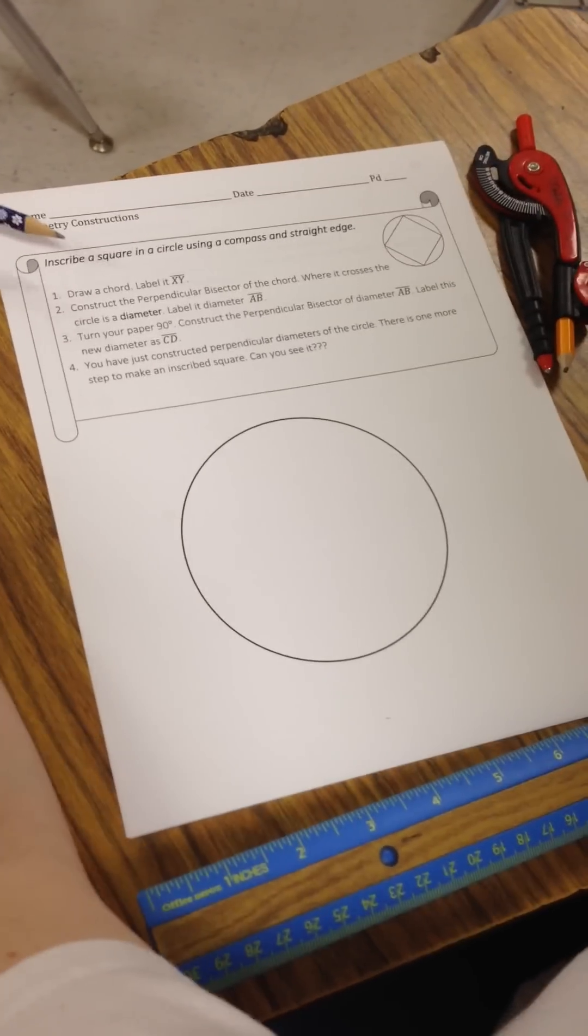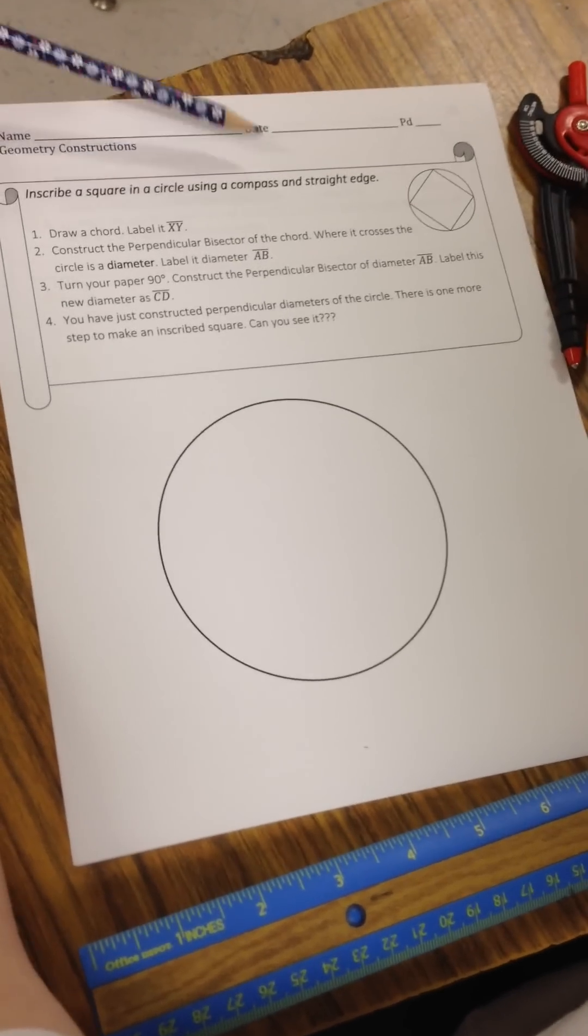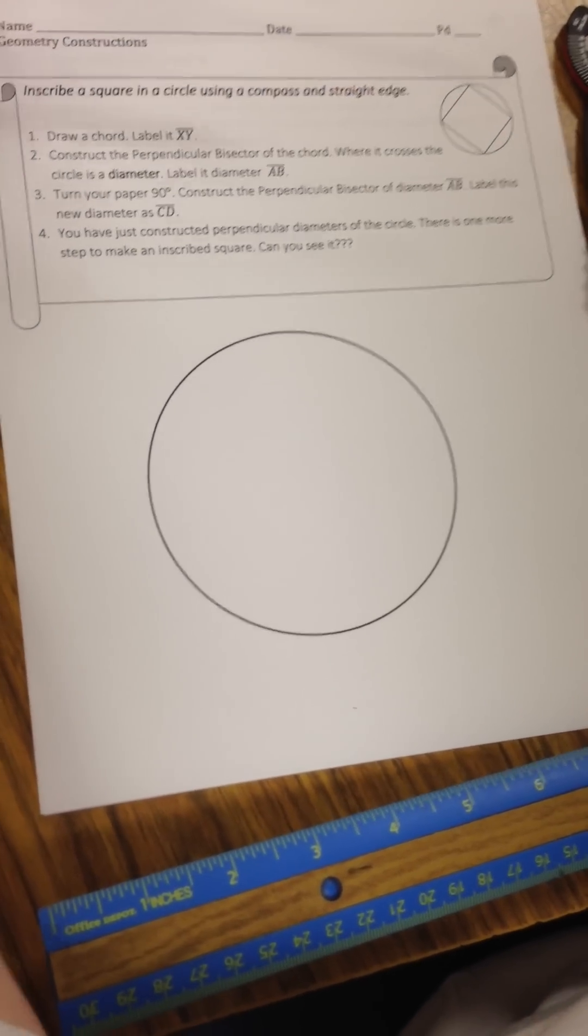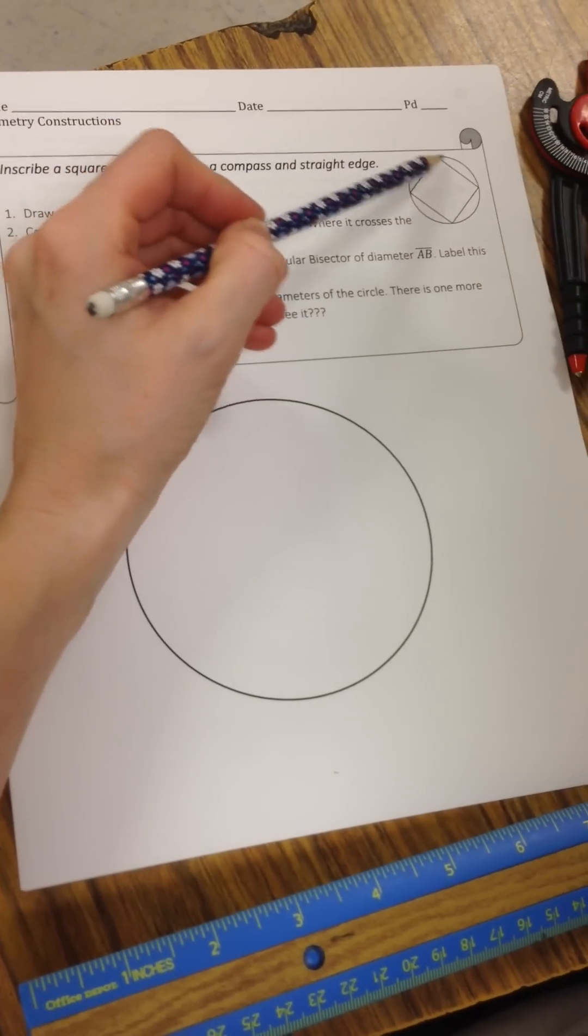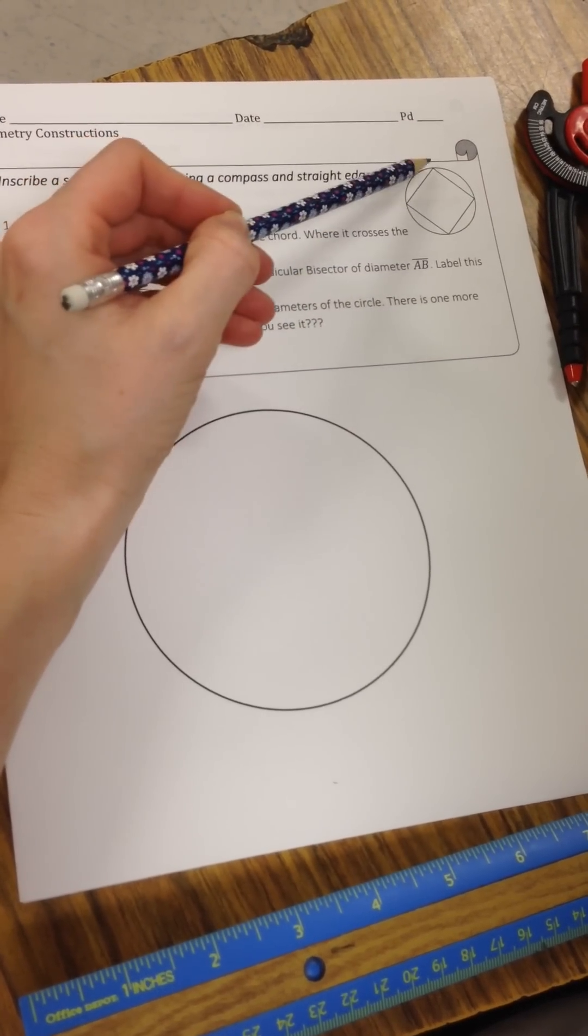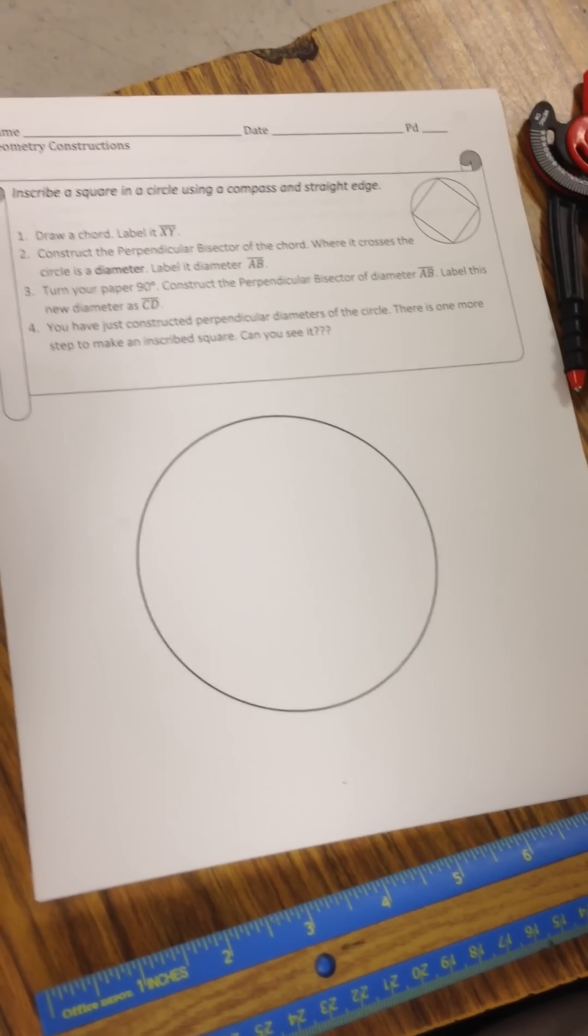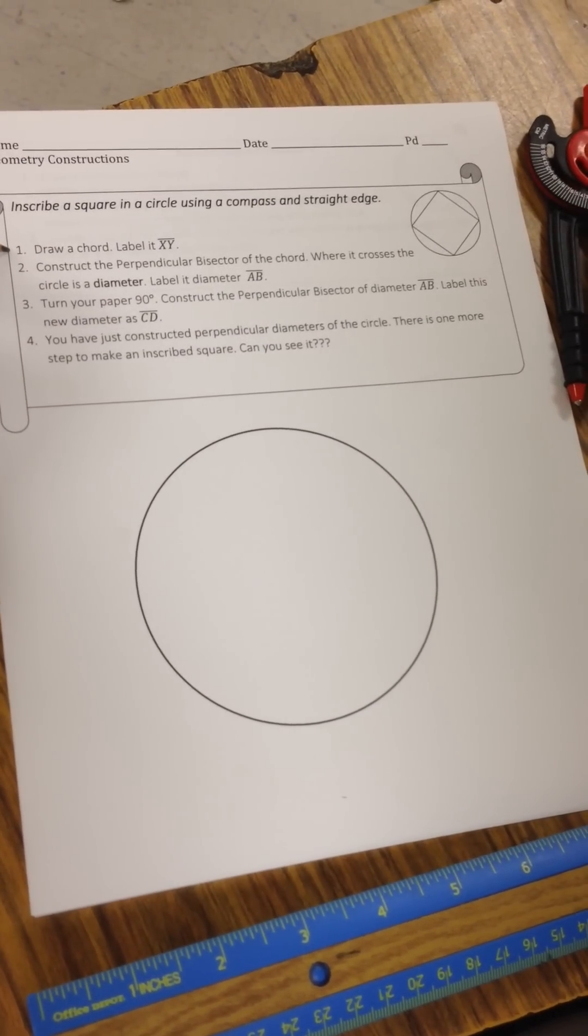Alright, we're now going to inscribe a square in a circle using a compass and a straight edge. At the end, we're going to hopefully have this square touching the circle at all four points.